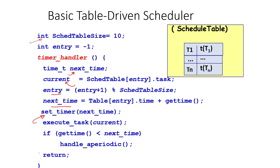If some time is still left, we handle any aperiodic tasks. The key idea of the table-driven scheduler is iterating through the table — in this case 10 entries, so we iterate with modulo addition (entry plus 1 modulo table size). Each time we get the current time and add the table entry's time field to compute the next wake-up time. The timer is set to that value, the current task is executed, and any remaining slack time can be used for aperiodic tasks.